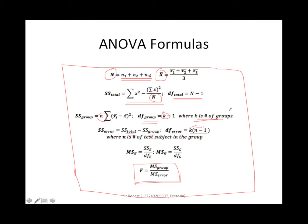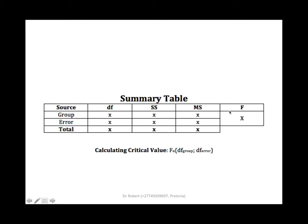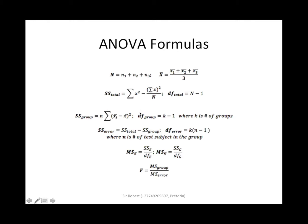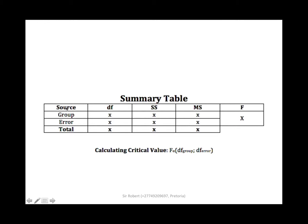Let's do an example to clarify. Before going to the example, you should know that whenever you determine these values, you should always summarize them in a table with columns: source, df, SS, MS, and F — with rows for group, error, and total. The SS values for group and error add up to give SS total, and the same applies for the df values.